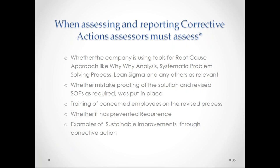When assessing and reporting corrective actions, most of the time assessors write that the company has a corrective action procedure and does root cause analysis — that is fine. But go further: how many examples are there of using root cause approaches? What kind of root cause approaches are they using — Why-Why analysis, problem solving process, Lean Sigma? In how many cases have you seen their use? What kind of mistake proofing have they implemented — for example, auto ejection systems for wrongly labeled products? A corrective action must also include training of concerned people, prevention of recurrence, and examples of sustainable improvements made as a result of corrective actions.